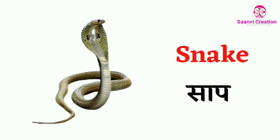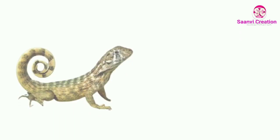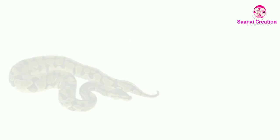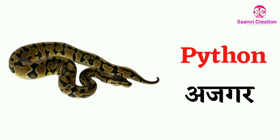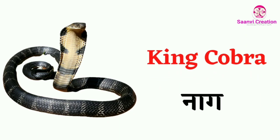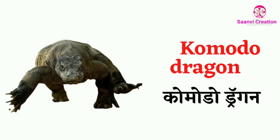Skink (S-K-I-N-K) — skink means 'Sanda'. Lizard (L-I-Z-A-R-D) — lizard means 'Sarda'. Python — python means 'Ajgar'. House lizard (H-O-U-S-E L-I-Z-A-R-D) — house lizard means 'Pal'. King cobra (K-I-N-G C-O-B-R-A) — king cobra means 'Naag'.